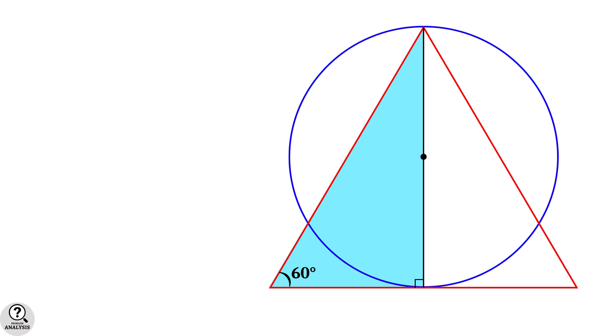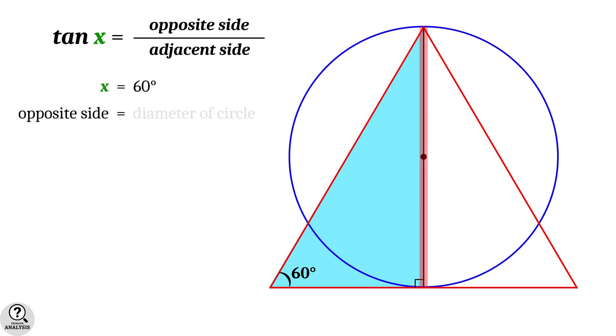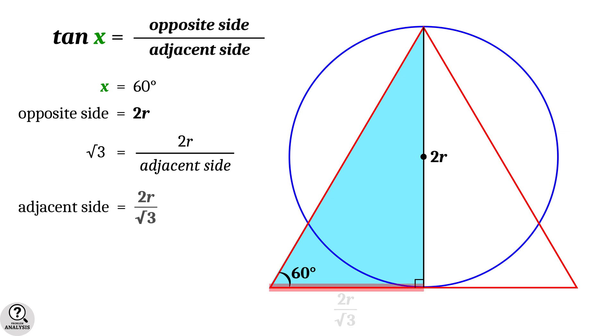Now from the basic trigonometry, we know that tan of an angle x is equal to opposite side divided by adjacent side. And here let's take x to be 60 degrees. So its opposite side is in fact a diameter of the circle, which is equal to 2r. Then tan 60 degrees is equal to 2r by adjacent side. But tan 60 degrees is a standard trigonometric value, which is equal to root 3. Therefore, adjacent side is equal to 2r by root 3.